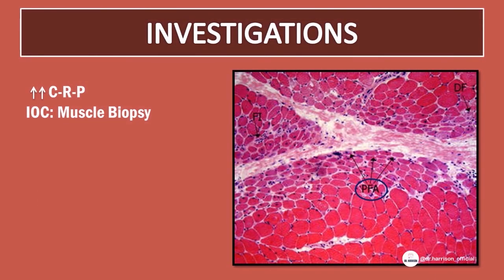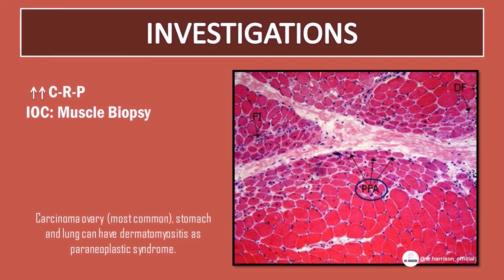Moving on to investigations. There is a very high level of CRP. The investigation of choice is muscle biopsy. The biopsy shows perifascicular atrophy and mononuclear cell infiltrate, which is characteristic for dermatomyositis. Carcinoma of the ovary, stomach, and lung can have dermatomyositis as a paraneoplastic syndrome.